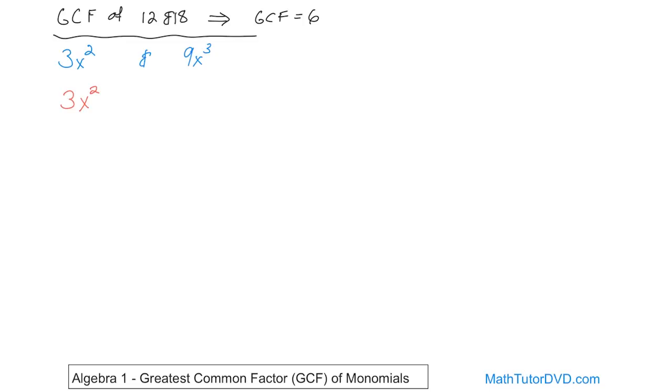So the greatest factor between 3 and 9 is 3. The greatest common factor between these two guys, x squared and x cubed, is x squared. And the reason is because x squared times 1 gives you x squared, and x squared times x...